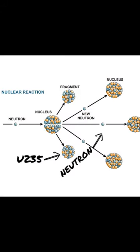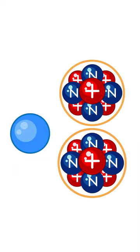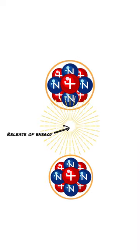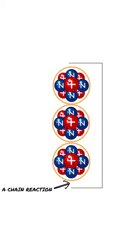When a uranium-235 atom disintegrates, it releases some neutrons. Some of those neutrons can be made to interact with other uranium-235 atoms, causing them to disintegrate as well. Those target atoms release more neutrons when they disintegrate, and then those neutrons interact with still other uranium-235 atoms, and so on. This is called a chain reaction.